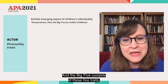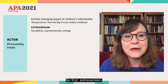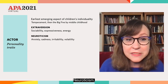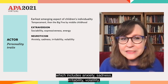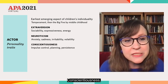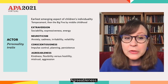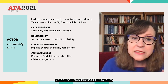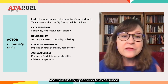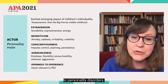The Big Five consists of five traits. First, extroversion — a person's sociability, expressiveness, and energy. Neuroticism, which includes anxiety, sadness, irritability, volatility, and a range of negative emotions. Conscientiousness, which includes impulse control, planning, and persistence. Agreeableness, which includes kindness and flexibility versus being hostile, alienated, mistrusting, and aggressive. And finally, openness to experience, which turns out to be the least relevant to personality disorders. These traits are shaped by both genetic and environmental processes.